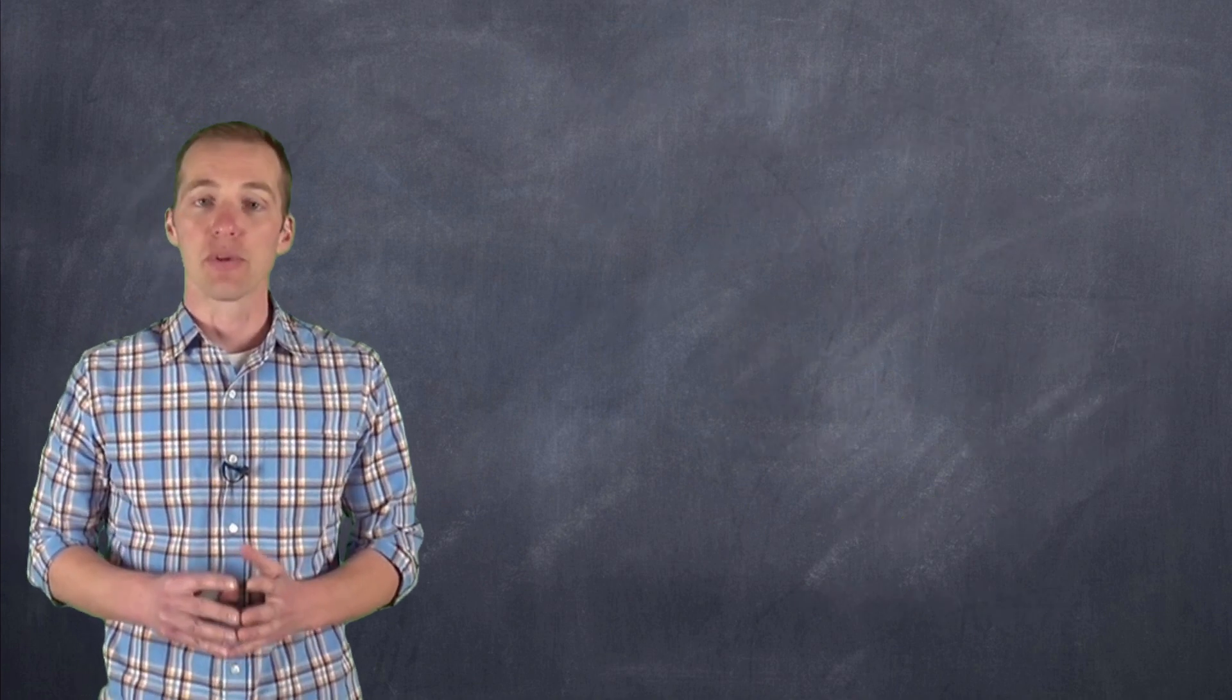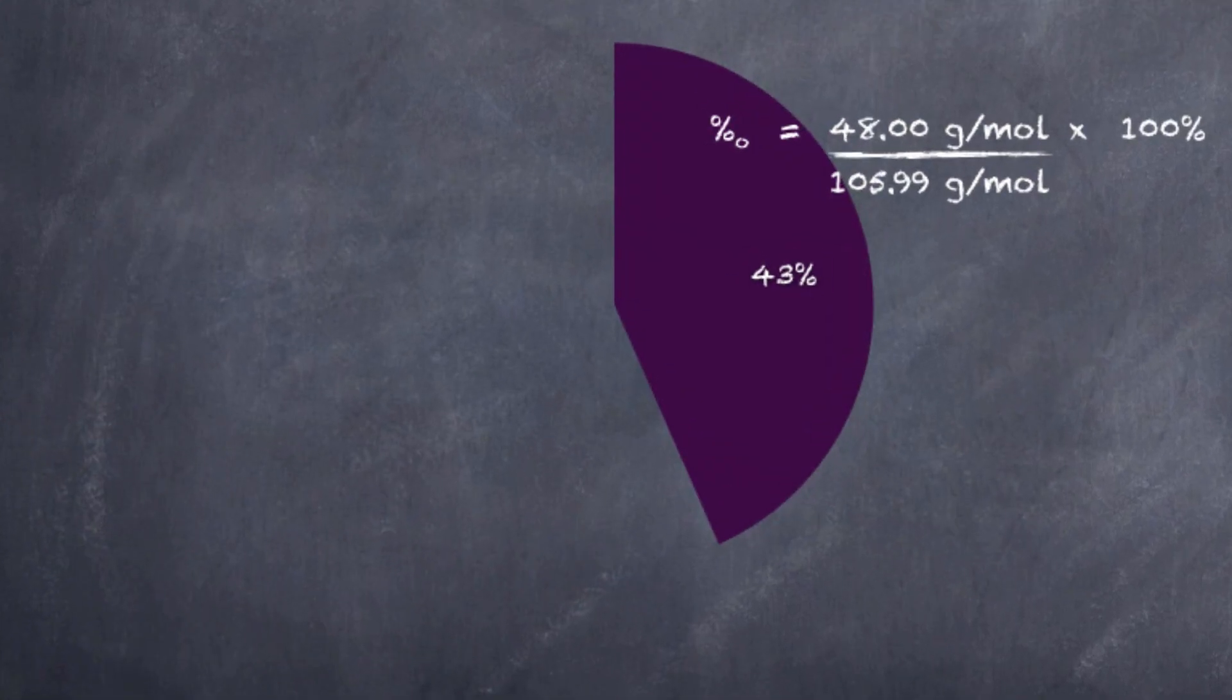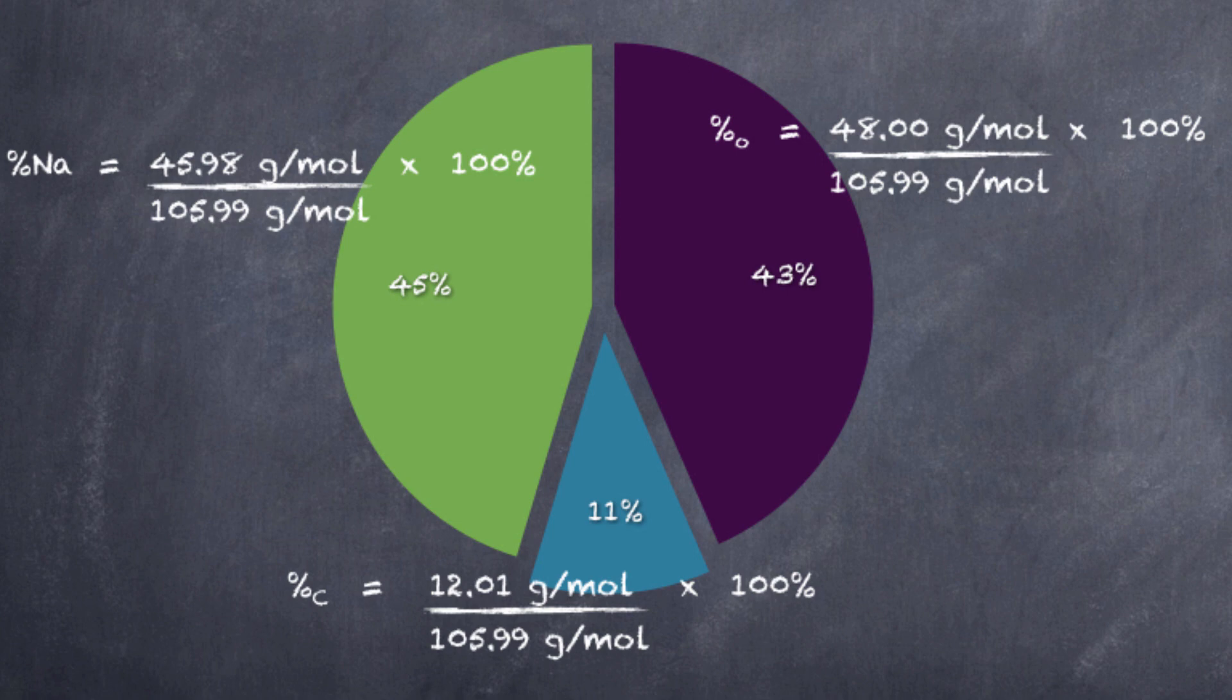Now, of course, all of these are represented in percentages, and we can see here, represented by our graph and our calculations, what the overall percentage of each one of these elements is in this sodium carbonate compound. And what we say is that these are the percent compositions for each particular element by mass in these compounds.